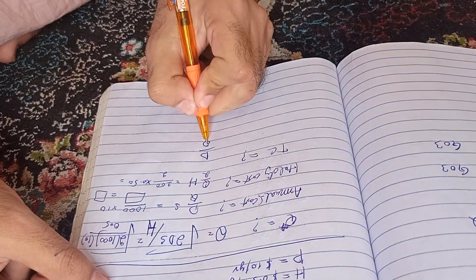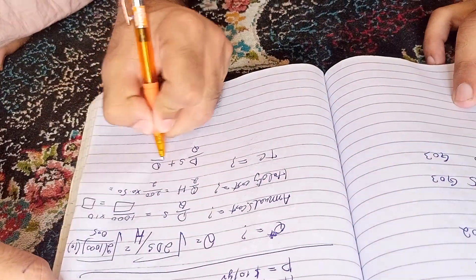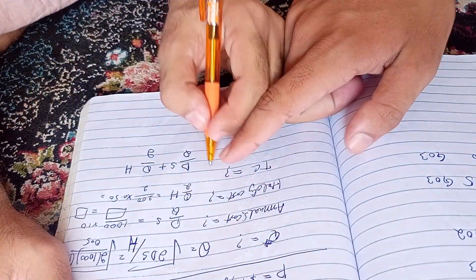D by Q times S plus Q by 2 times H. That one has already been defined.